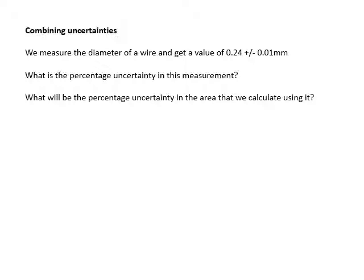Combining uncertainties - this is important. Imagine you're measuring the diameter of a wire using a micrometer. A micrometer has a resolution of a hundredth of a millimeter. You get 0.24 plus or minus 0.01 millimeters. What's the percentage uncertainty in the diameter?